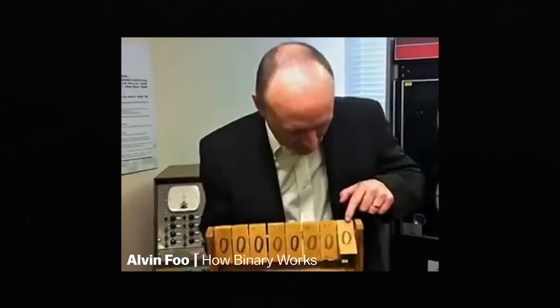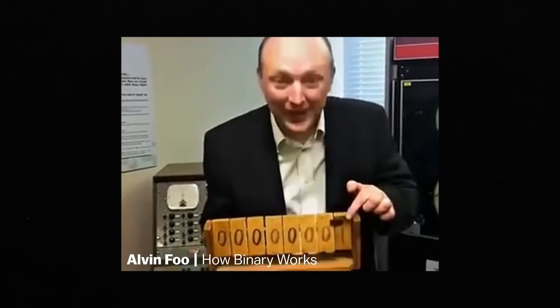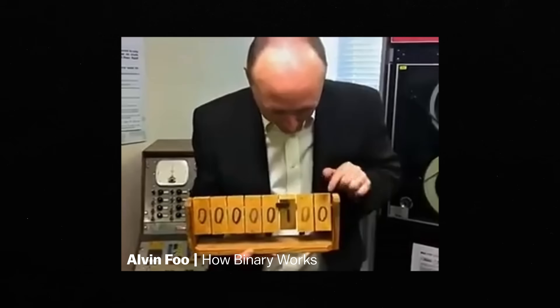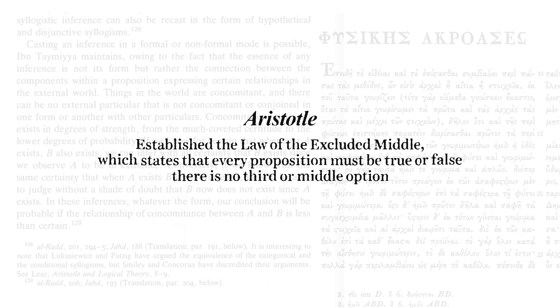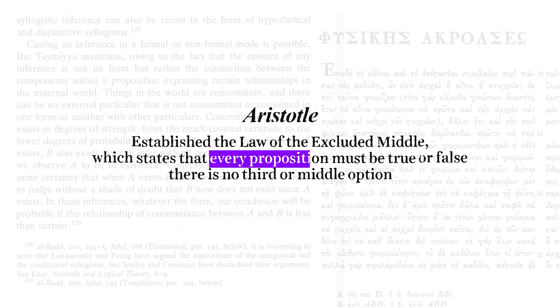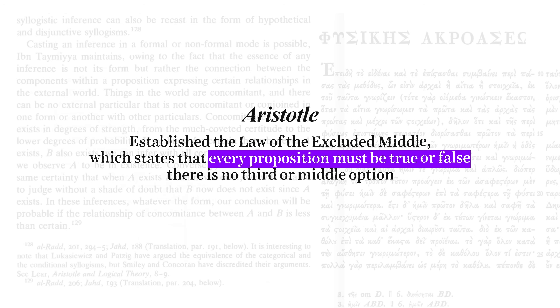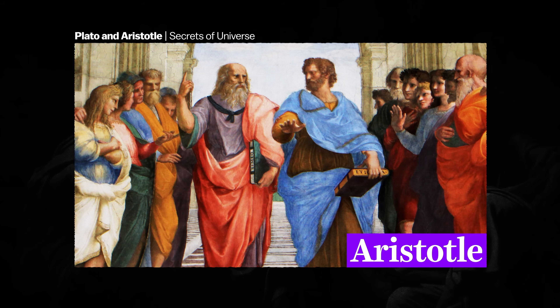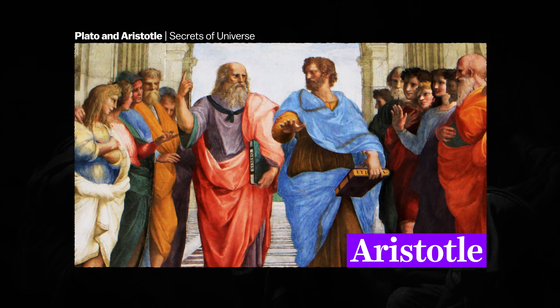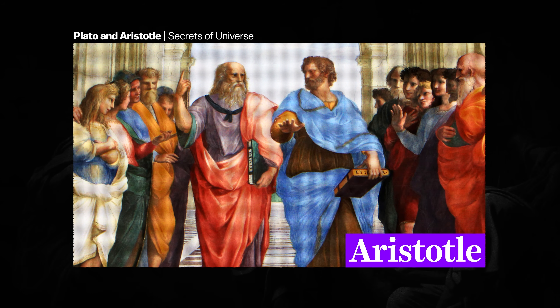But it also cemented a worldview — that truth comes in only two forms. Computers work with zeros and ones, and in a sense, this reaffirms the ancient philosophical principle that every proposition must be true or false. This idea, known as the law of the excluded middle, can be traced back to Aristotle.